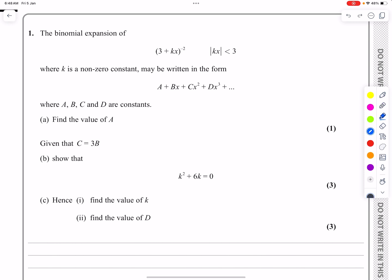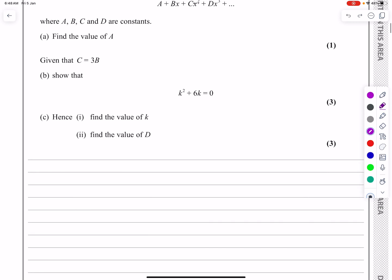Because we've got the power being minus two there, then we need to use the binomial expansion to get started.